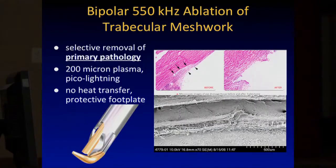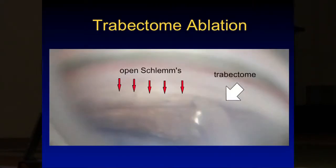Why is this a nice surgery? First of all, what is it? It's really not cautery — don't think of it as cautery. It is a bipolar 550 kilohertz ablation technique. It creates something one could call a pico-lightning, and it creates a 200-micron plasma cloud. It removes the primary pathology of glaucoma — the juxtacanalicular meshwork — which is where the main part of the flow resistance is.